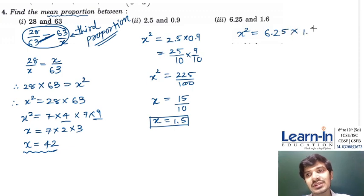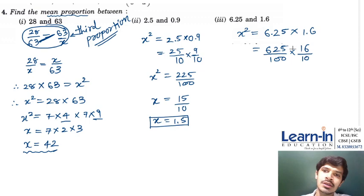Now for the last question, the square numbers are 625 upon 100. So x squared equals 6.25 times 1.6, which is 625 over 100 times 16 over 10. The square root of these numbers can be taken.